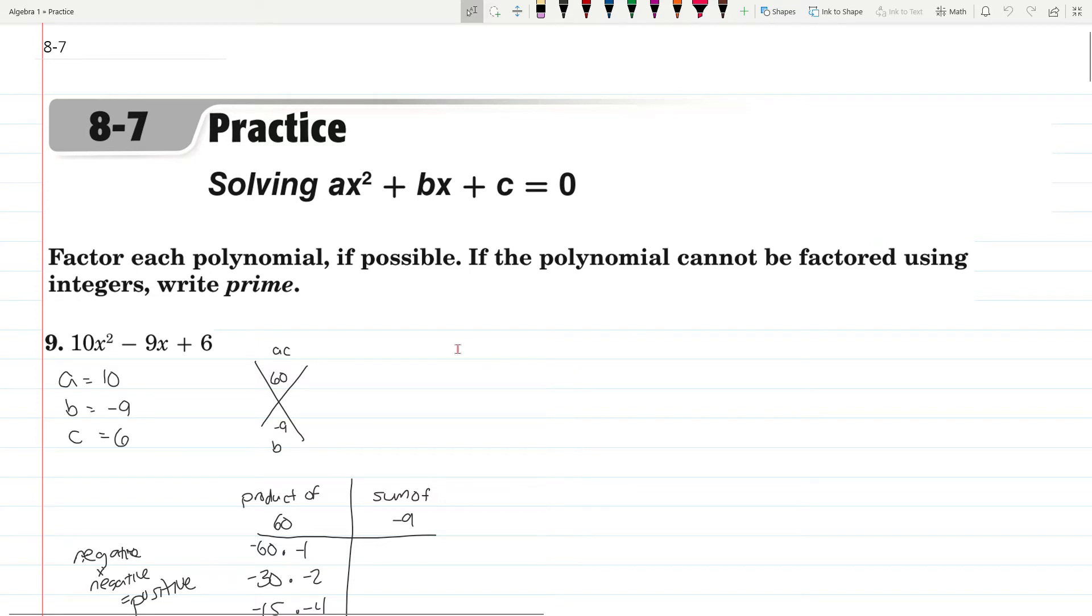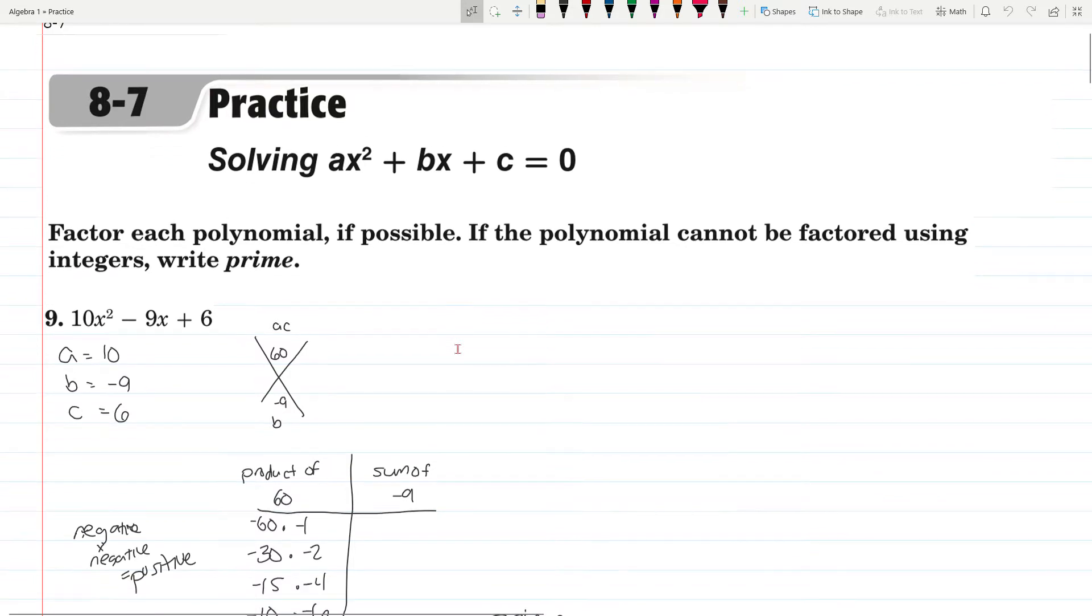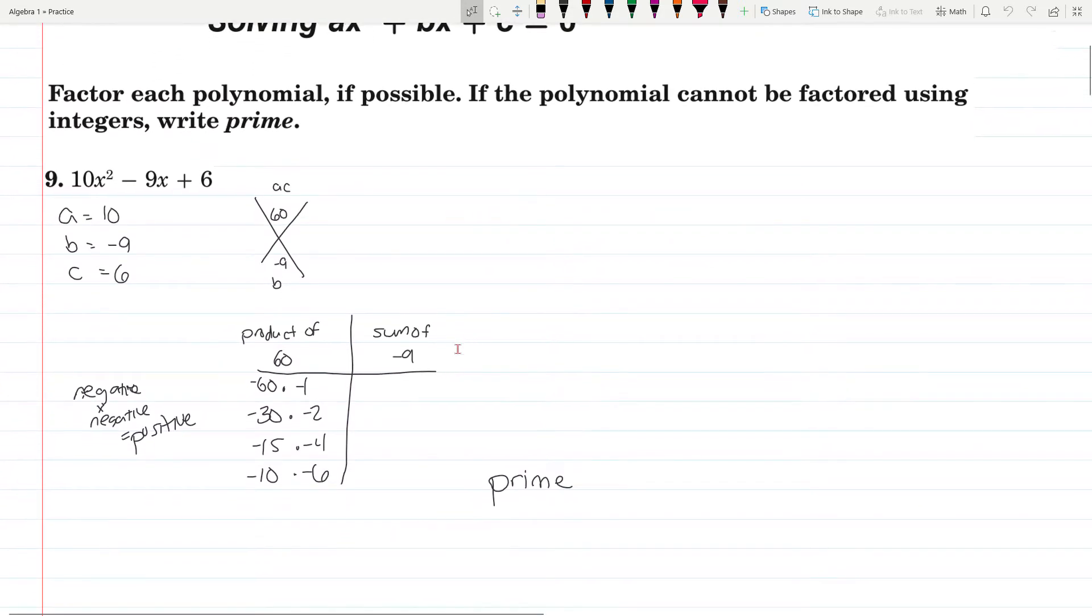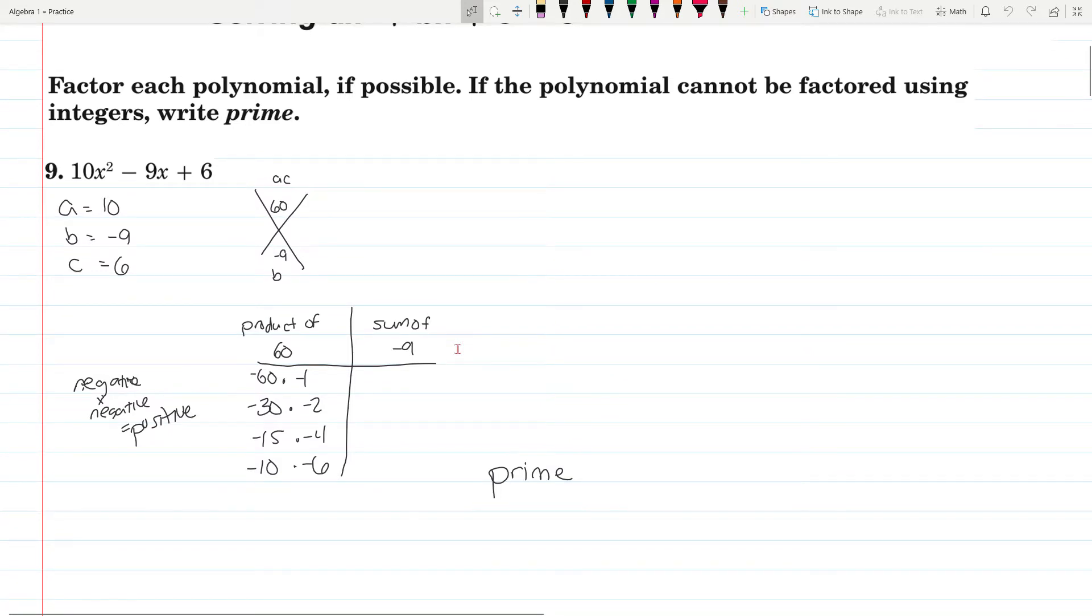Hey, Mr. Richards here. Here are your 8-7 practice solutions for Algebra 1. We had 9 to 27 odd, and the first five questions dealt with factoring polynomials. If it cannot be factored using integers, write prime. We're going to use our Xbox method again.